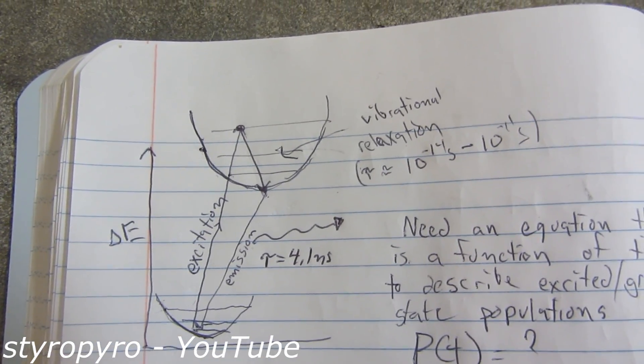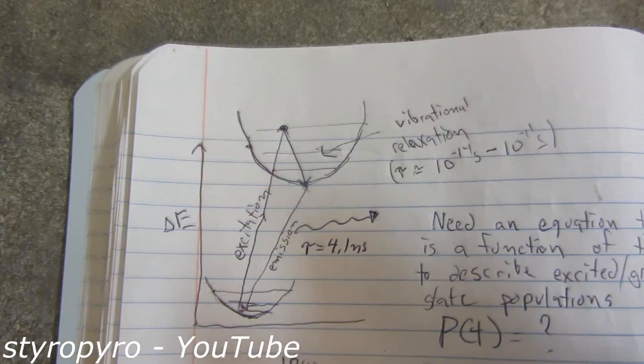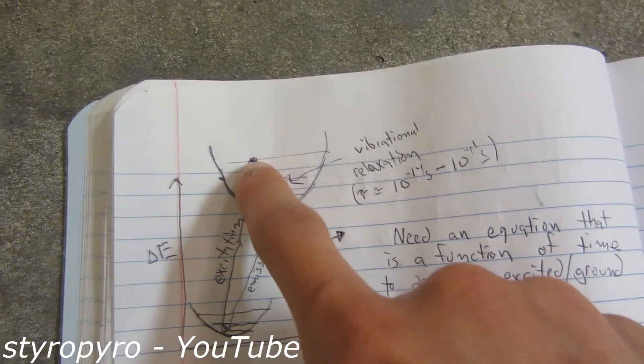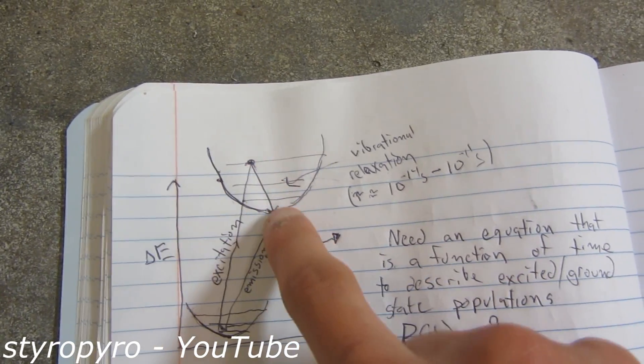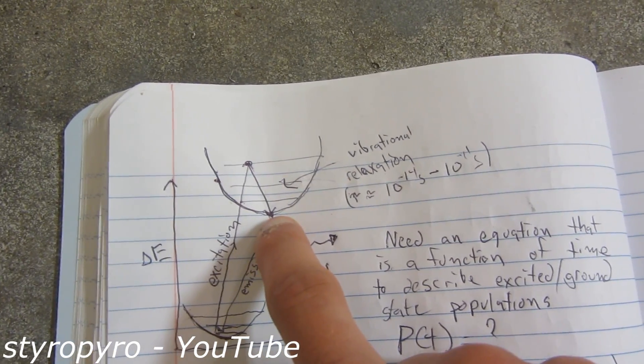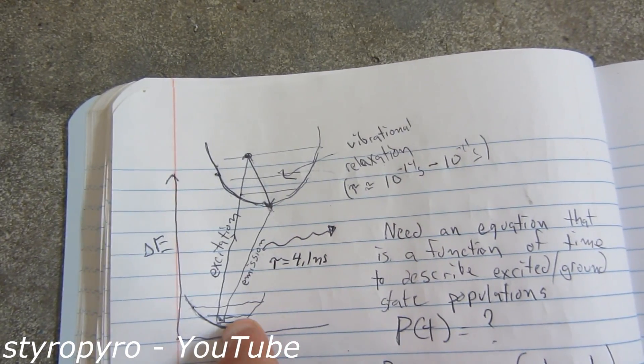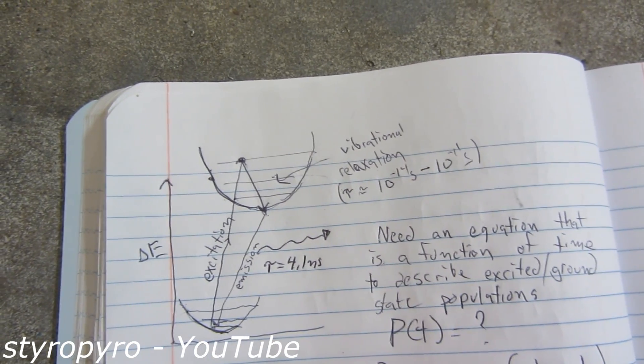Here's a rough idea of what the molecular energy diagram of fluorescein looks like. So you start by hitting it with a blue photon, which excites an electron to a higher excited state, and that quickly relaxes down to the lowest excited state by vibrational relaxation. And then from there, the electron falls back down to the ground state, emitting the green photon that we know and love.